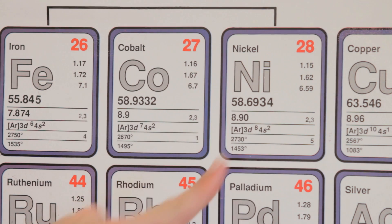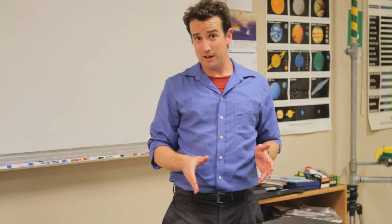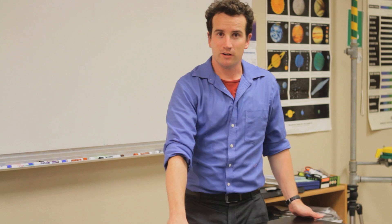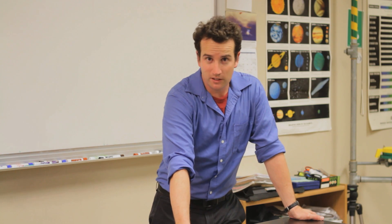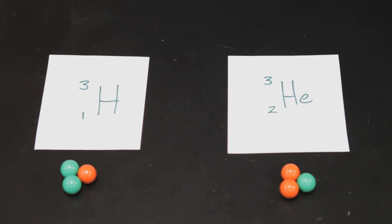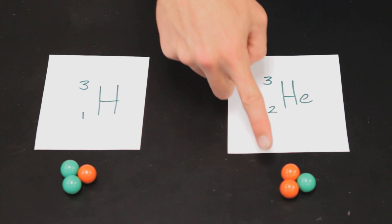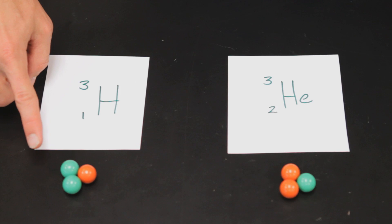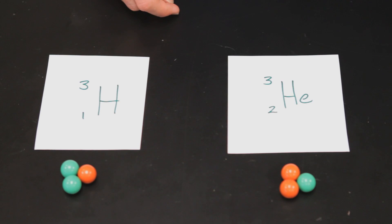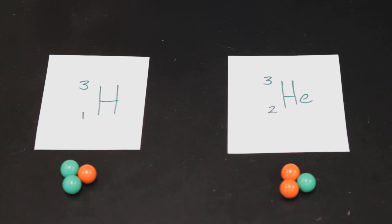Typically, we don't identify elements by their mass number because they're usually identified by their atomic number. Mass number is not a good way to identify an element. Let me demonstrate why. As an illustrative example, consider the nuclei of hydrogen and helium in the hydrogen-3 and the helium-3 isotopes. You'll notice that they both have the same mass number, but the number of protons is different, and that's what determines the identity of the elements.